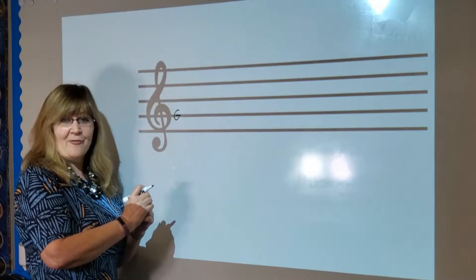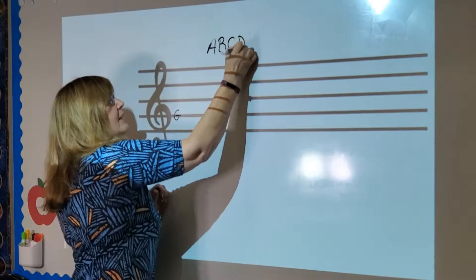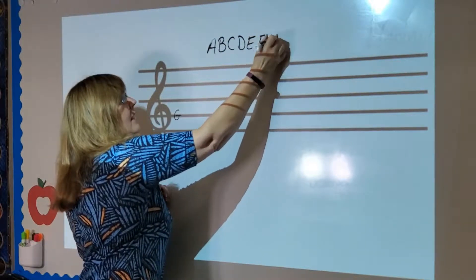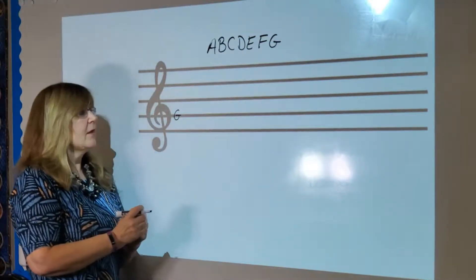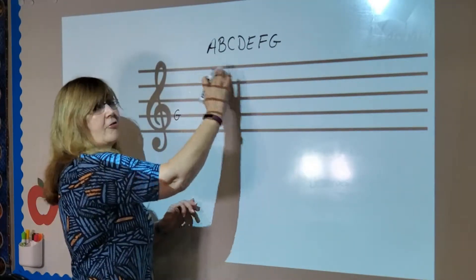So from there we can figure out all the other notes on the staff. Now the musical alphabet fortunately only has seven letters. They are A, B, C, D, E, F, and G. So once you get to G and you need to go on you just start over with A again.